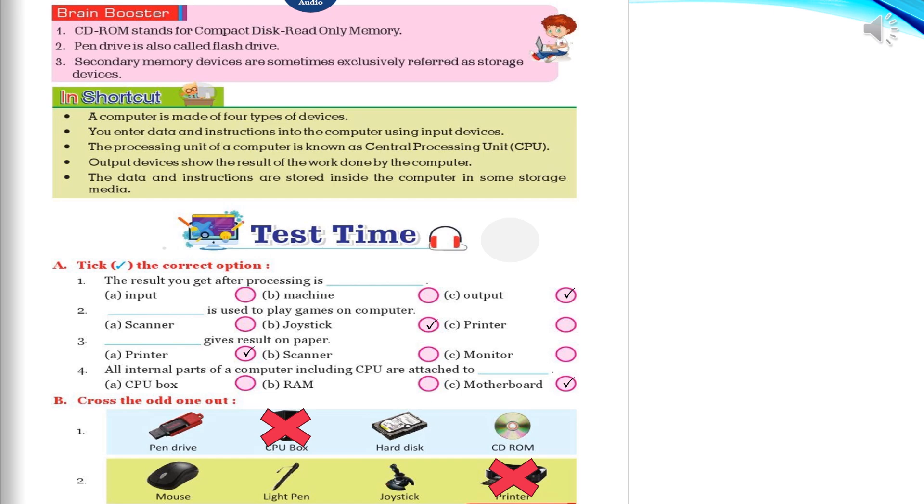In short: A computer is made of four types of devices. You enter data and instructions into the computer using input devices. The processing unit of a computer is known as the central processing unit. Output devices show the result of the work done by the computer. The data and instructions are stored inside the computer in some storage media.